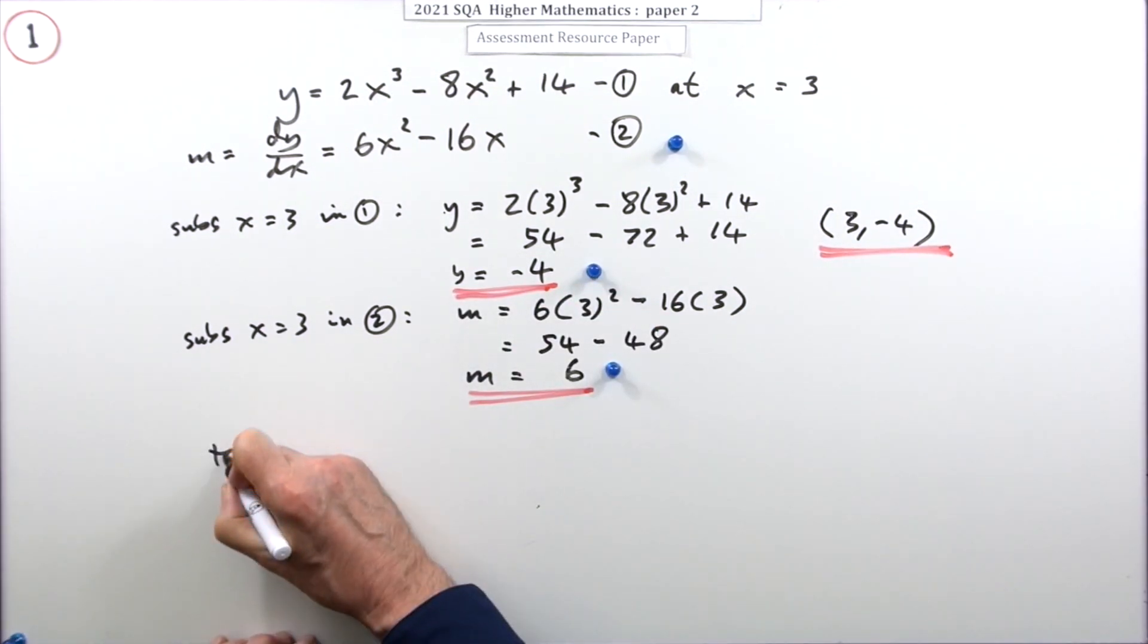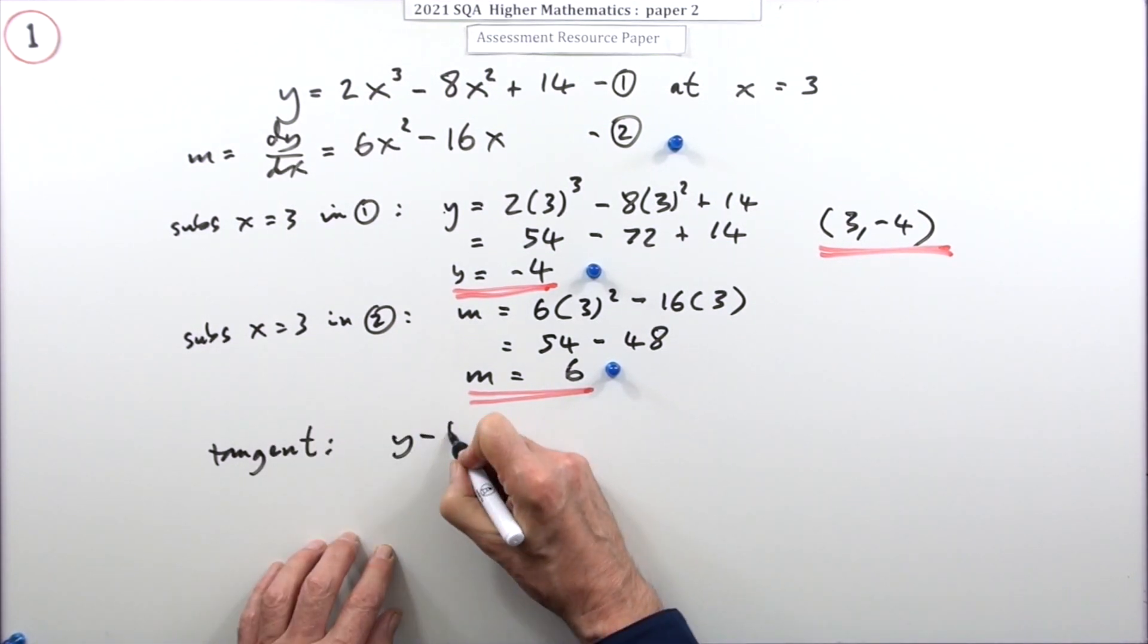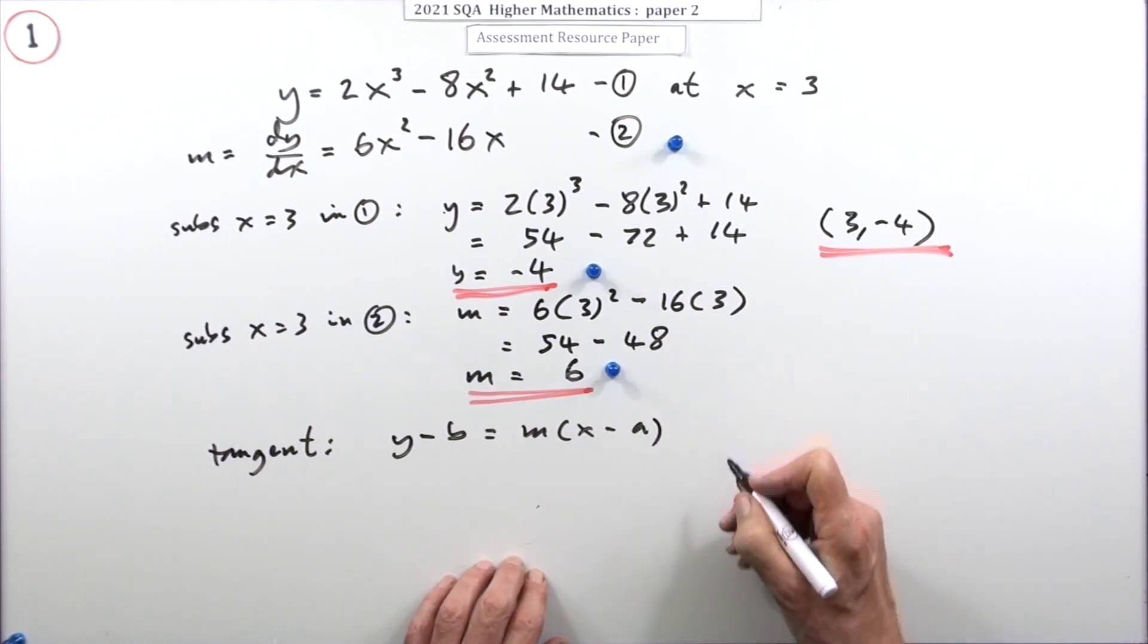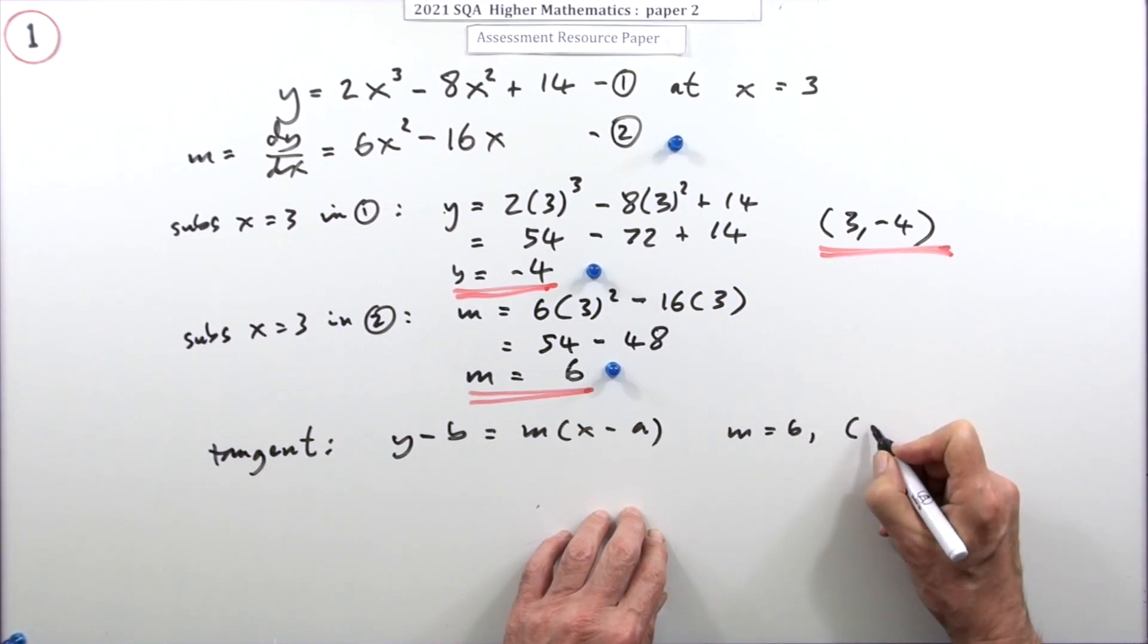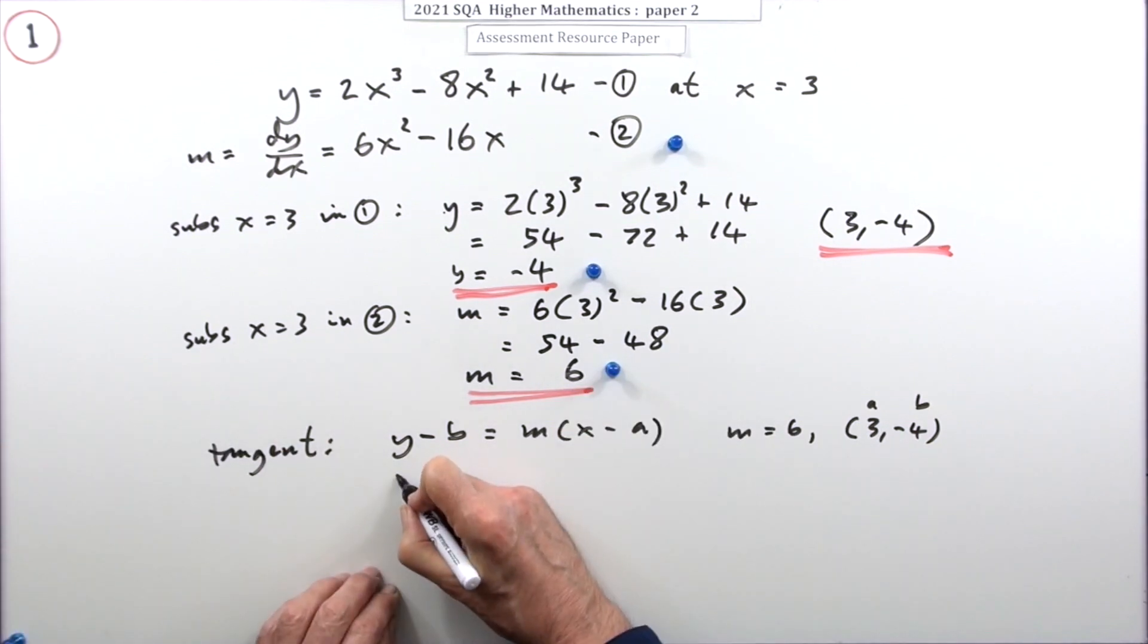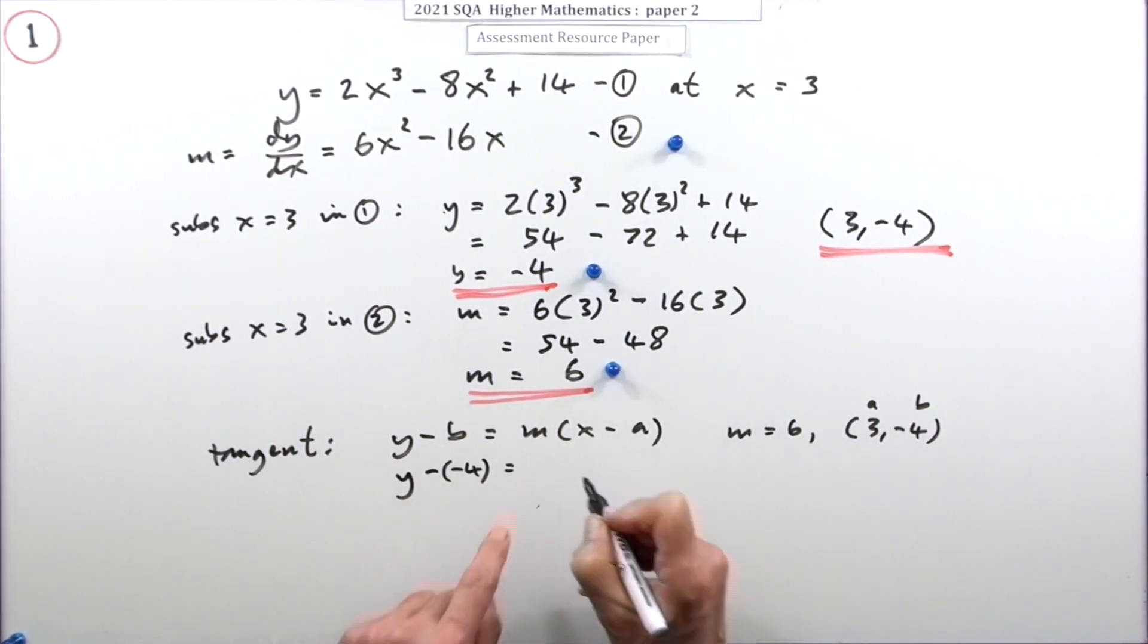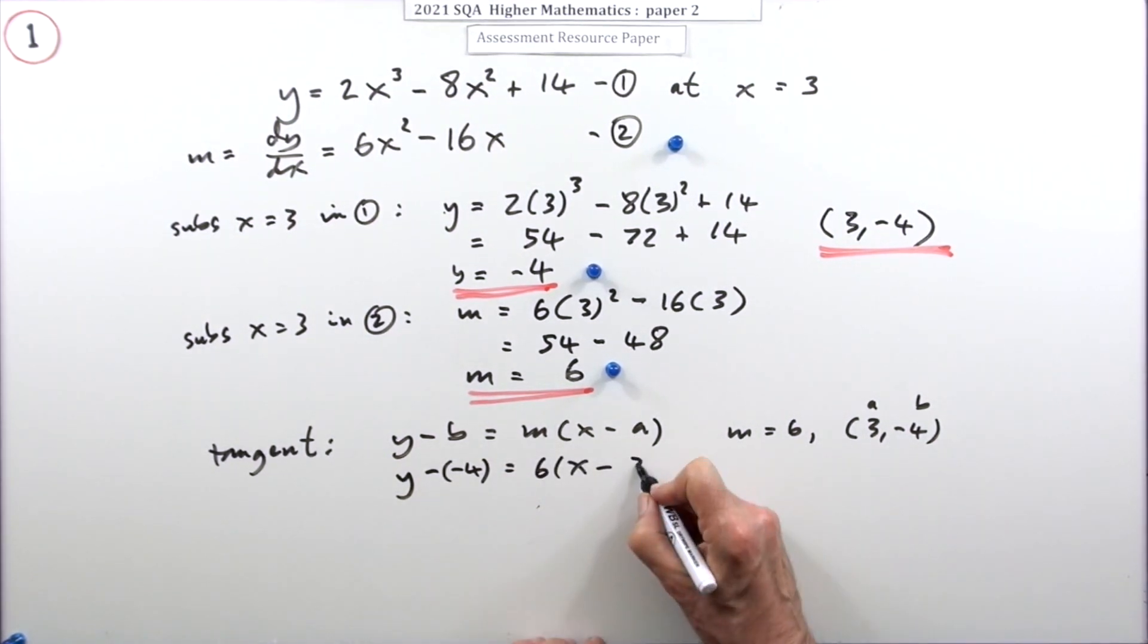Now the tangent - well that's a line, y minus b equals m(x - a). I'll put them down anyway where I'm using m equals six and three, negative four for the a and the b. I don't need to put that down but I have done. Now, y minus the y coordinate, y minus the negative four, is the gradient six times x minus the x coordinate.